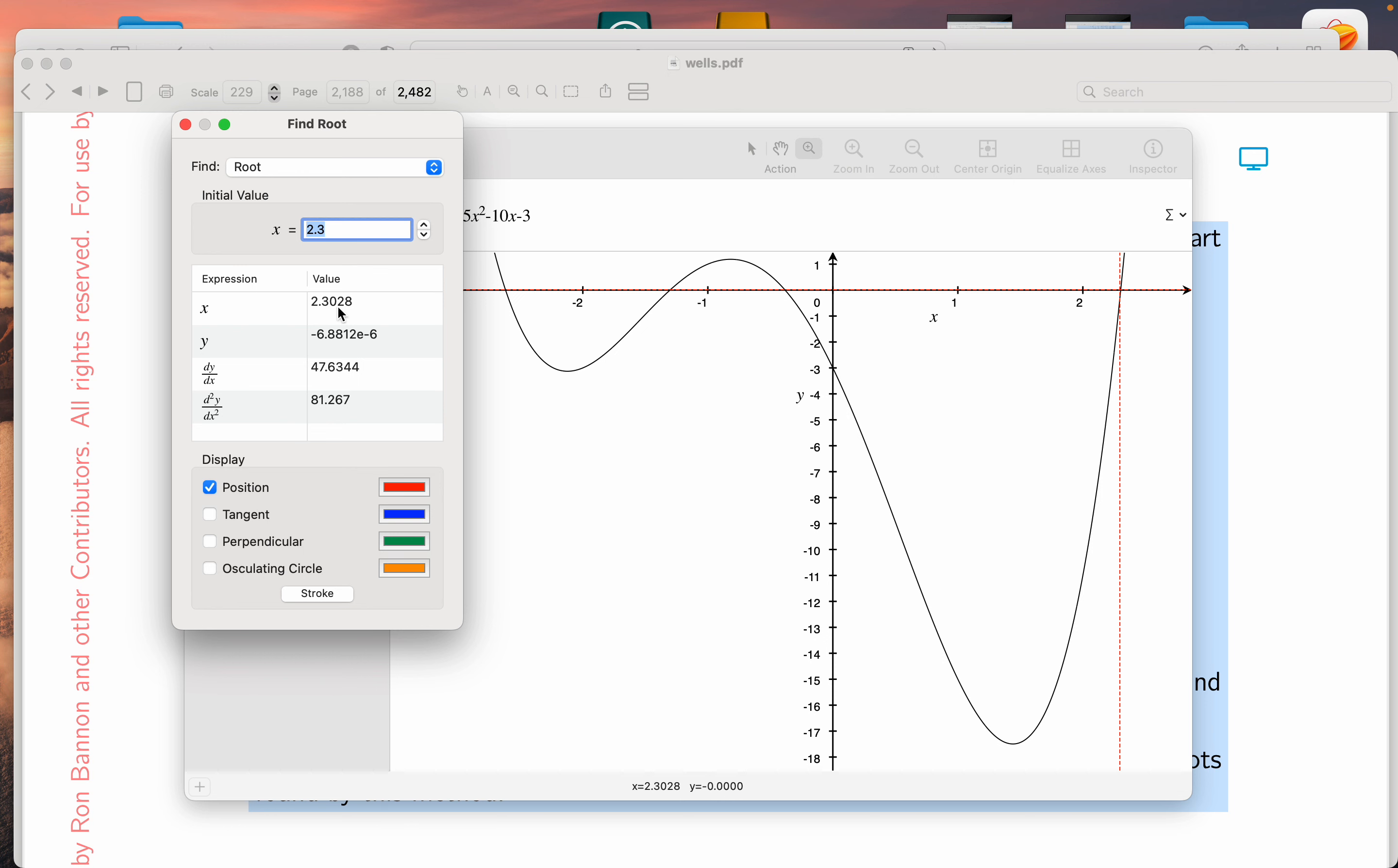What does it tell me? Well, they're telling me it's 2.3028. That's approximate to four places of accuracy. Notice they put a crosshair on it. They tell me the y value is e to the minus 6, which means 10 to the minus 6. Very close to 0, but not exactly.